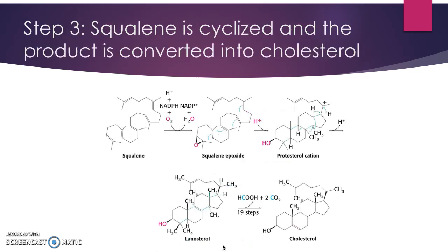Step three is where squalene is cyclized and its tetracyclic product is then turned into cholesterol. First, squalene is cyclized to form a ring, then transformed into squalene epoxide via oxygen and NADPH. From there, squalene epoxide is transformed into lanosterol, a 30-carbon intermediate. There are then 19 steps that remove three carbons to yield our 27-carbon cholesterol.